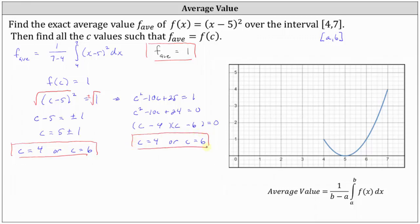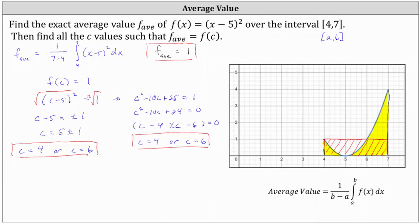Let's look at what we found graphically. On the right, I've graphed f(x) over the closed interval from four to seven. Shading the area bounded by the function and the x-axis over this interval gives the yellow area. Because the average value is one, we sketch a rectangle over the closed interval from four to seven with a height of one. The area of this red rectangle is exactly equal to the area bounded by the function and the x-axis over the same interval. From the graph, we can also verify our c values: at x equals four, f(4) equals one, and at x equals six, f(6) also equals one. This is why we have the c values of four and six.